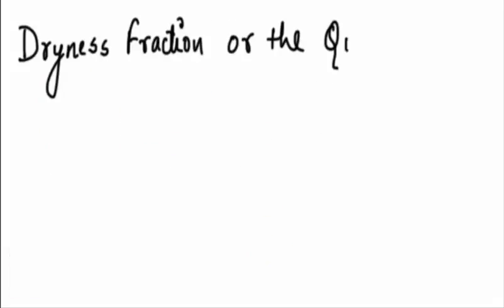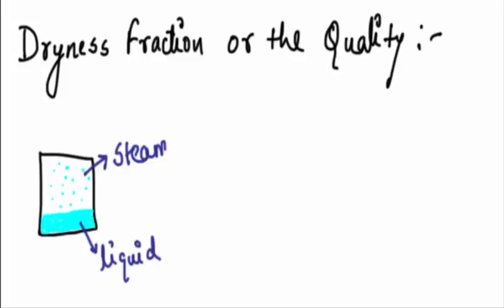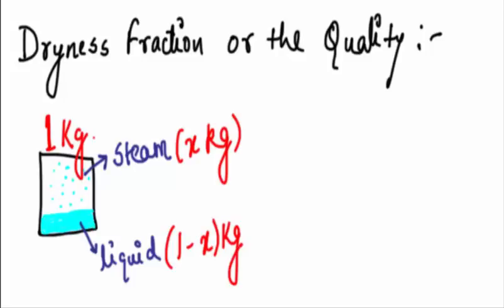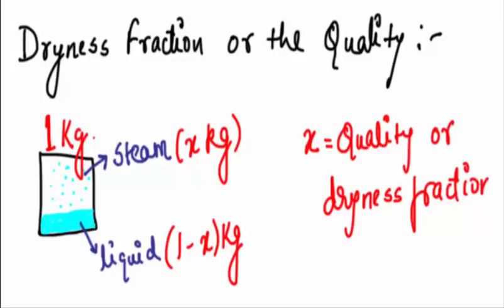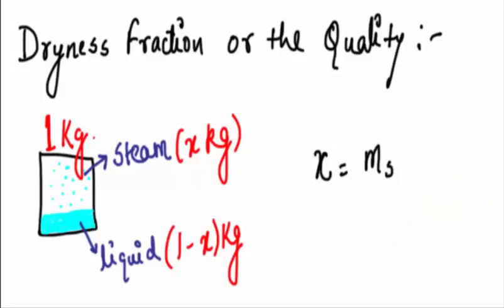Let's talk about another important thing: dryness fraction or quality. Suppose in a container you have liquid and steam and the total mass is 1 kg. Out of it steam is x kg and the rest, that is 1-x kg, is the weight of liquid. Then this x is called as the dryness fraction or the quality of steam, or in formula: x is equal to mass of steam upon mass of steam plus mass of liquid.